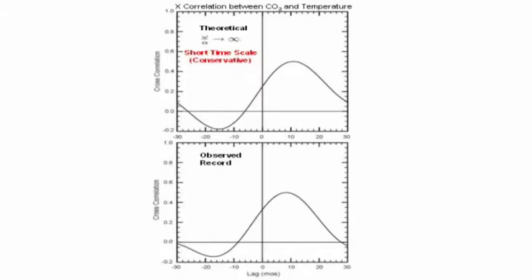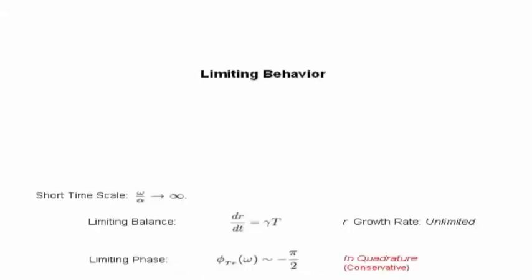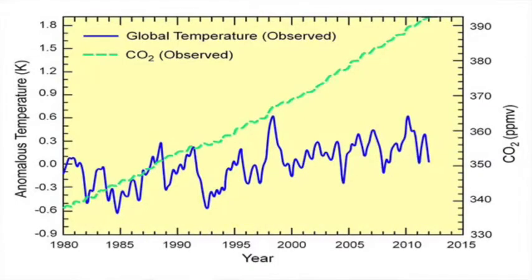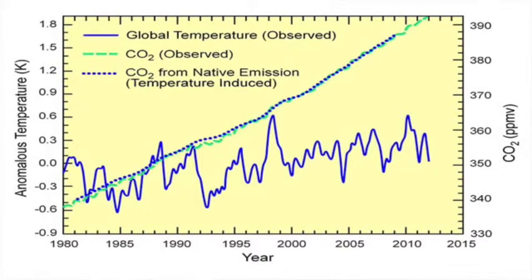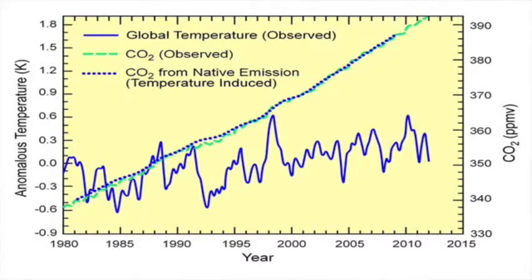Recall, on timescales shorter than a century, changes of CO₂ are conservative, controlled by emission from native sources. CO₂ then evolves not like temperature, as it does in the model world, but like the integral of temperature. In dotted blue is the integral of observed temperature — it closely tracks observed CO₂, even after the 1990s, when the observed records of CO₂ and temperature clearly diverged. If CO₂ tracks the integral of temperature, which it clearly does, it cannot track temperature, which it clearly doesn't.